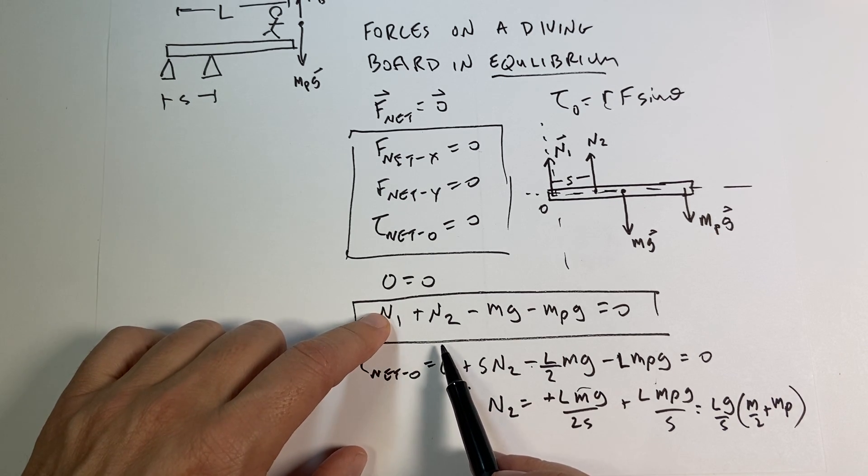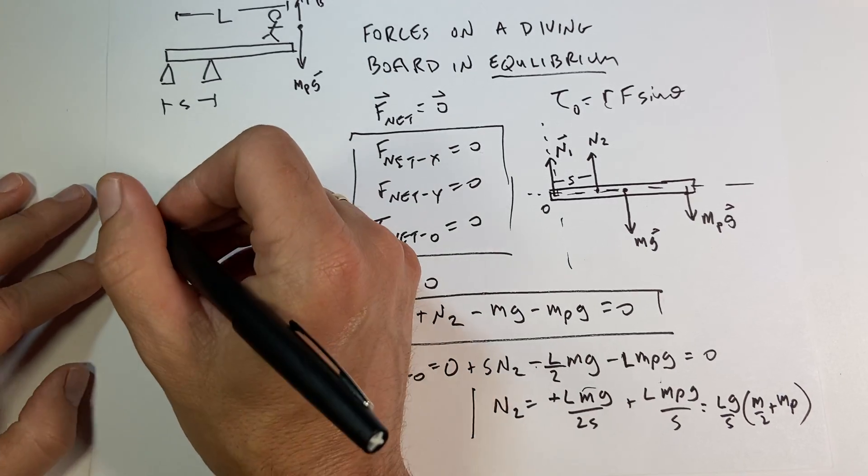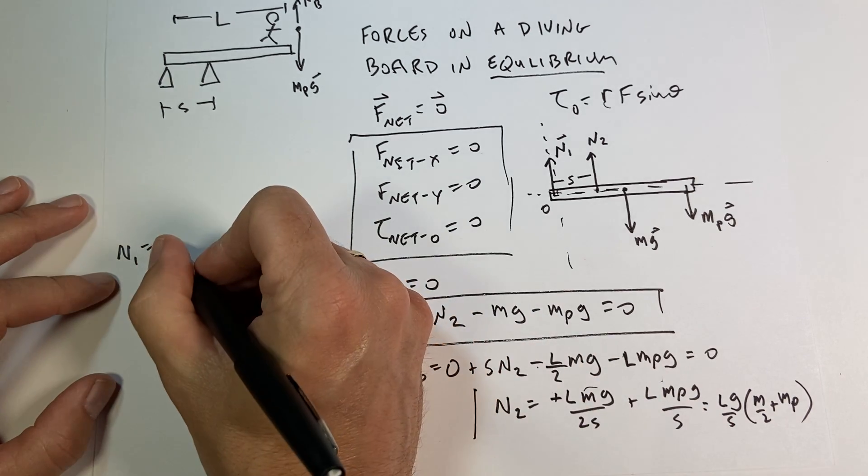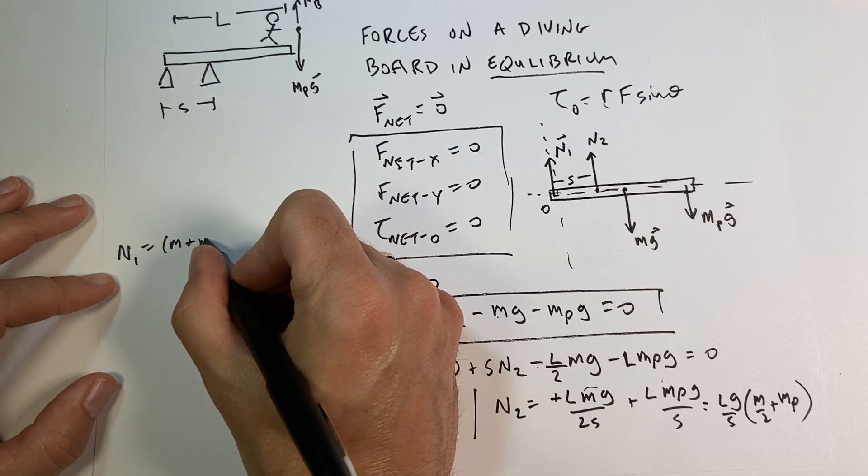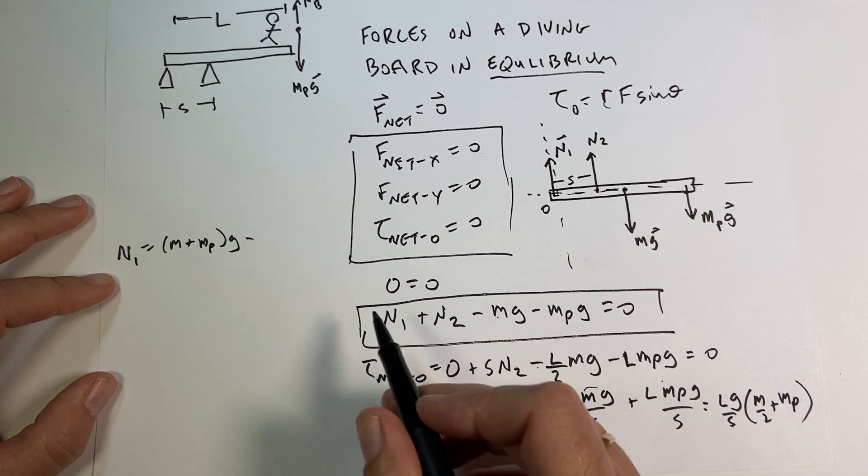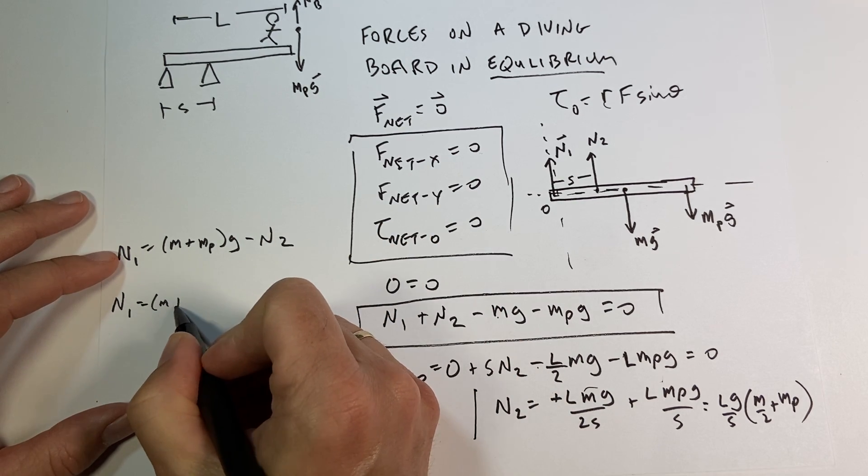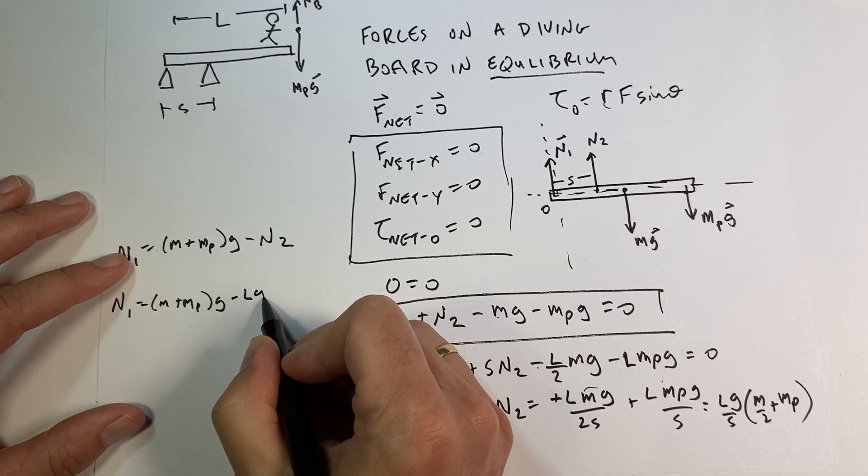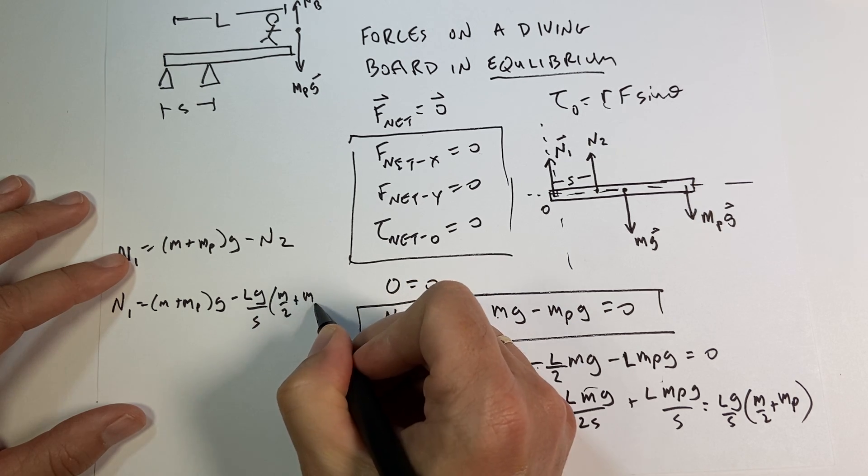Now I can come back over here. Now that I know N2, I can solve for N1. So let's write that over here. So I get N1 equals this stuff, which is going to be, I'm going to add these two together. So I get M plus M P times G minus N2. So I get N1 equals M plus M P G minus L G over S times M over 2 plus M P.